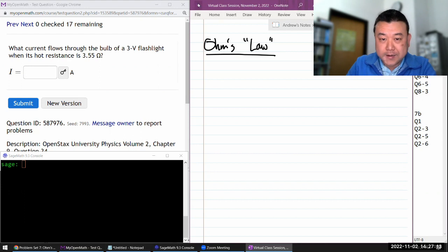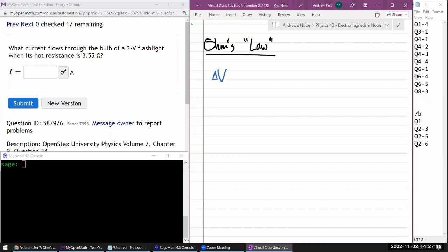So Ohm's law says this: that there's a relationship between voltage that you place across some material and the current that you measure across that material. And it says that they are linearly related, and the linear coefficient that relates them is what we call resistance. So that's Ohm's law.